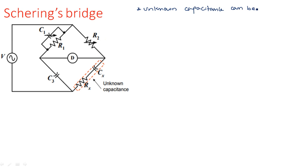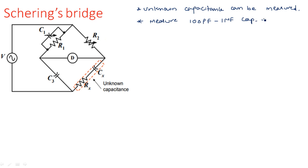The Schering bridge is used to measure very low capacitance — we can measure 100 picofarad to 1 microfarad capacitance using this Schering bridge, but with a plus or minus two percent accuracy.